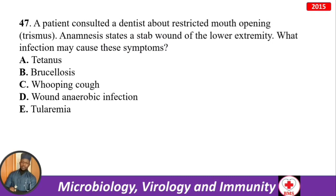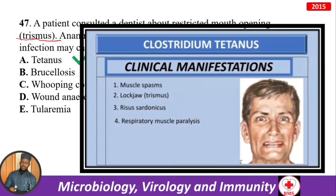A patient consulted a dentist about restricted mouth opening — that is trismus. History includes a stab wound of the lower extremity. The infection causing these symptoms is tetanus. Main clinical manifestations: muscle spasm, lock jaw (trismus), risus sardonicus — that devilish smile — and respiratory muscle paralysis.